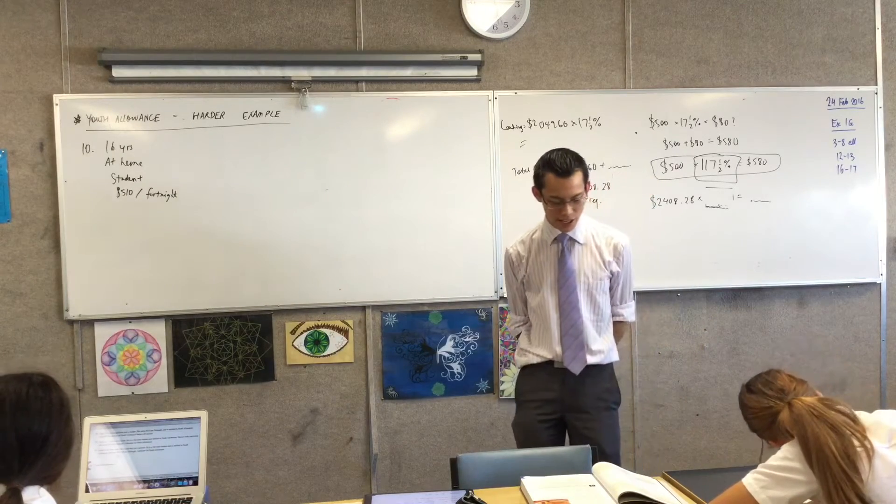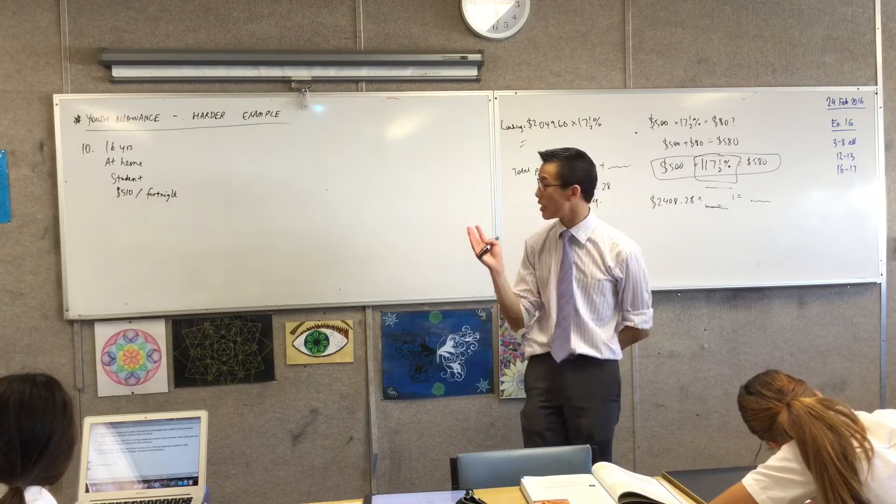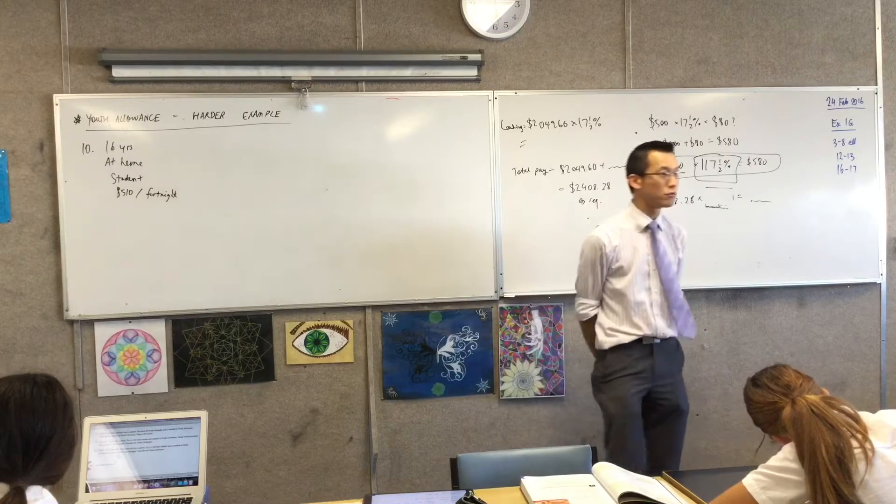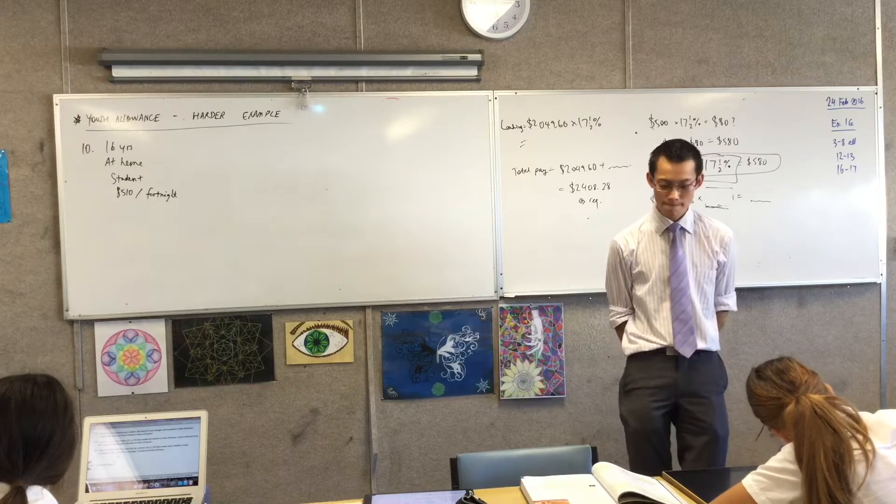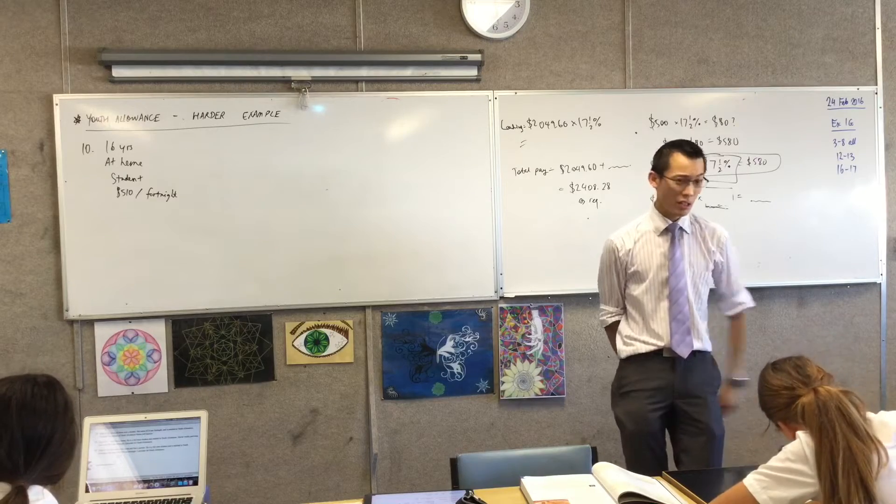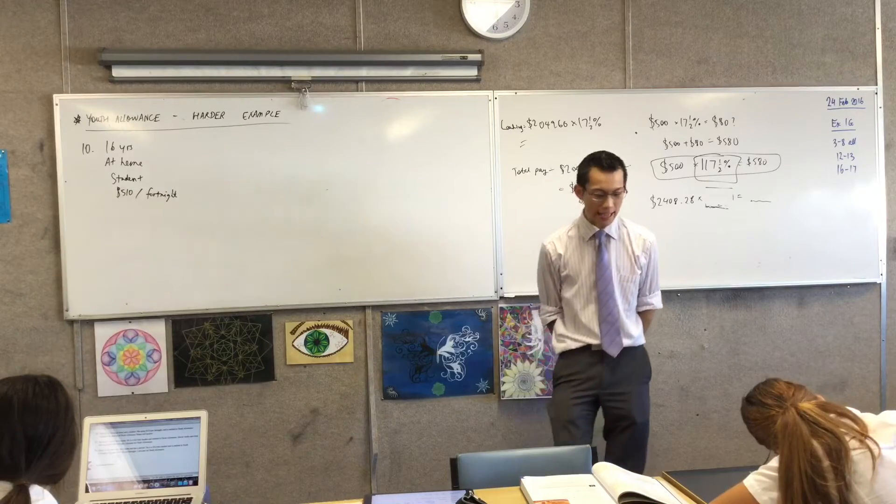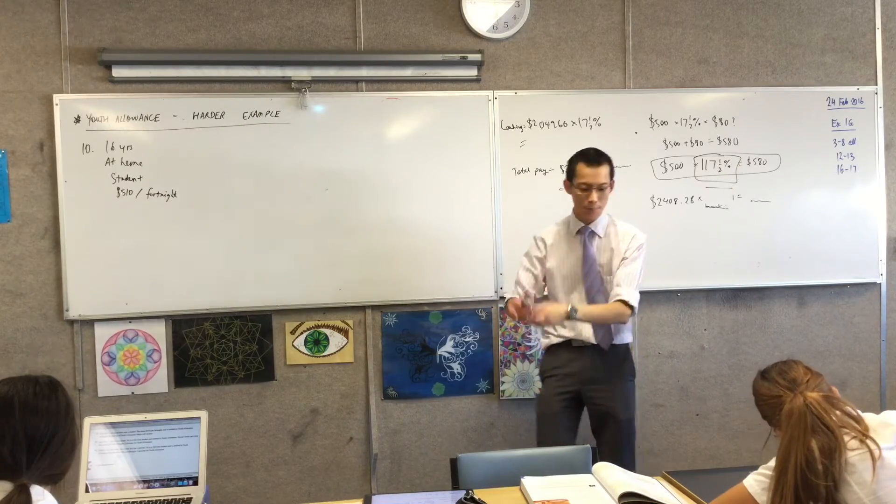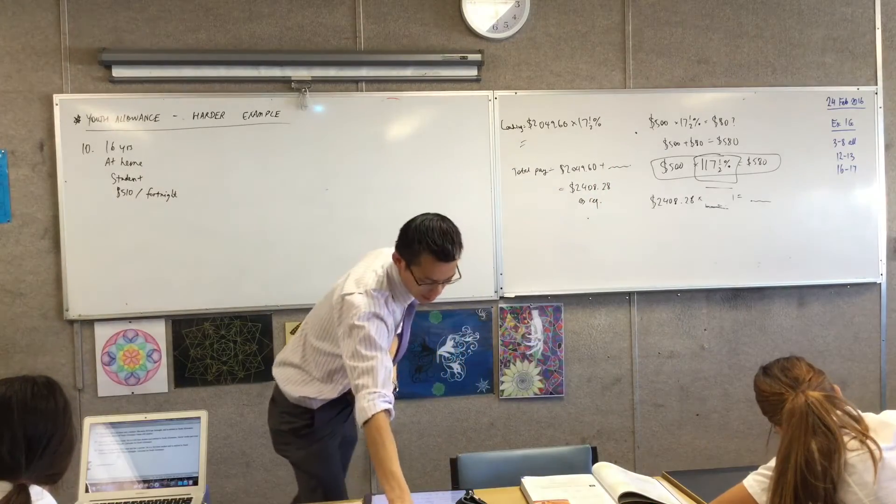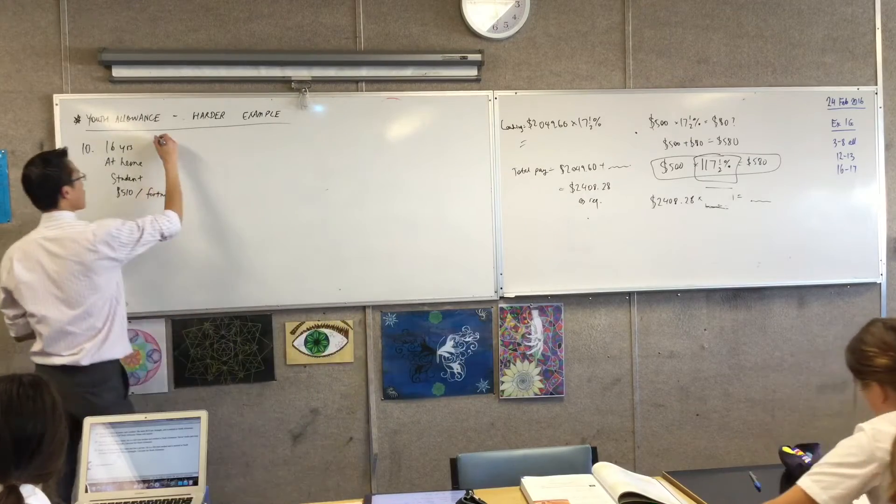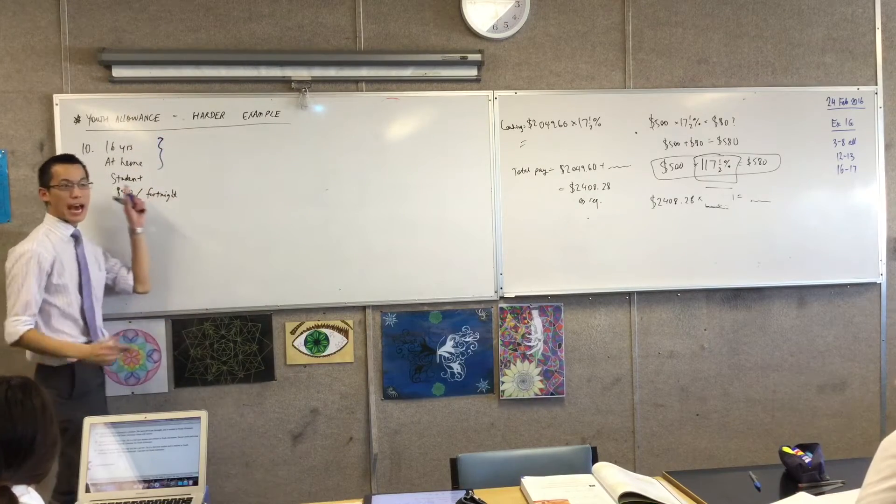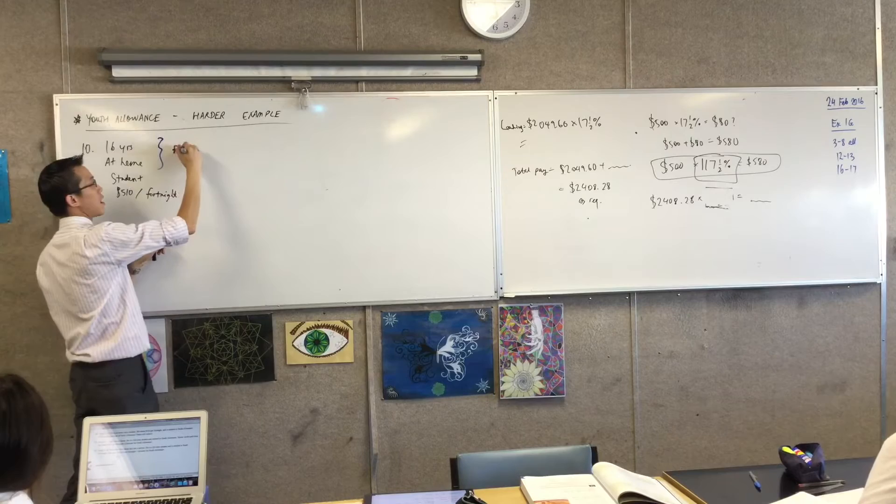Being that she's a 16-year-old, doesn't say anything about any children, and she's at home, what will her full allowance be? Can you see? It looks like the first one, doesn't it? Because the first row is about single-year-old children under 18 which she is, at home. So what I'm going to do is another color here. I'm going to say this means she has a full allowance of...